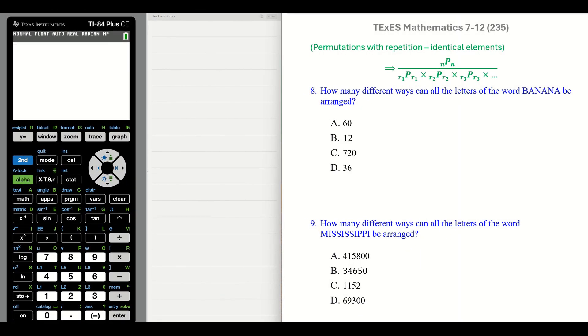Number 8: How many different ways can all the letters of the word banana be arranged? As you see, there are 6 letters in the word banana. And we have A is repeating. There are 3 of those. N is repeating. There are 2. Please notice our little formula here.